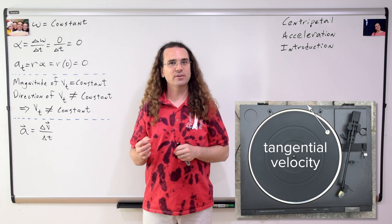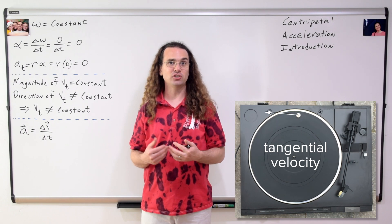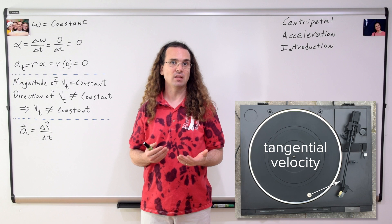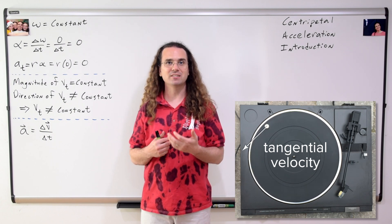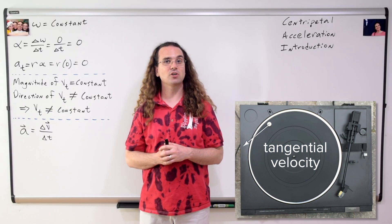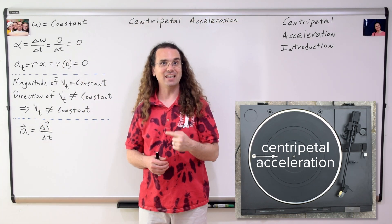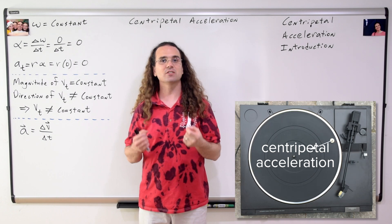Remember, linear acceleration equals the change in linear velocity over change in time. Therefore, if the tangential velocity of the mint — which is a linear velocity — is changing, then the mint must have a linear acceleration. We just proved the mint does not have an angular acceleration and it does not have a tangential acceleration. This is a new linear acceleration. It is called centripetal acceleration. The linear acceleration that causes the tangential velocity to change direction is centripetal acceleration.